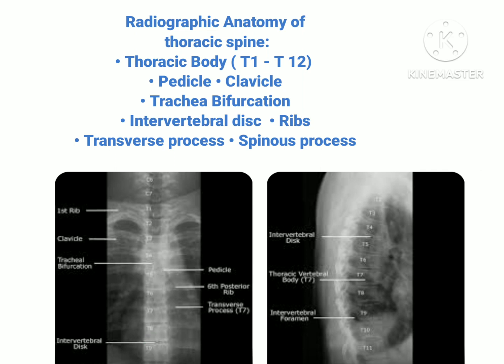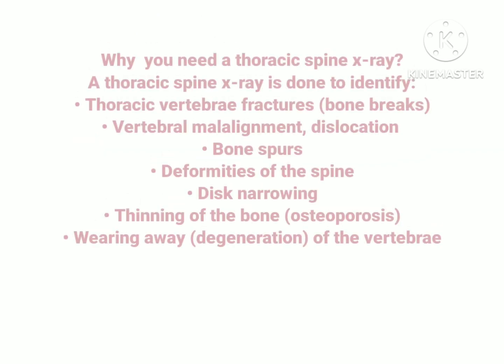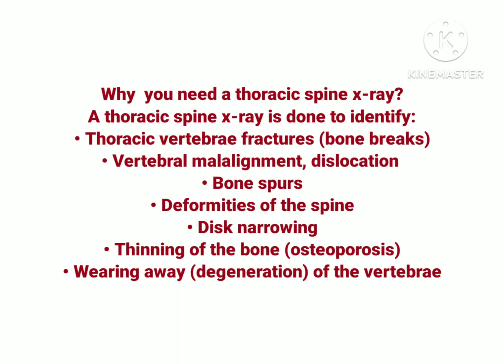Next is the intervertebral disc — the joint that connects two vertebras. There are a total of 23 intervertebral discs in the spine: 6 in the cervical region, 12 in the thoracic region, and 5 in the lumbar region. Next is the transverse process — the point on the vertebra where the pedicle joins with the lamina. Next is the spinous process, which attaches muscles and ligaments.